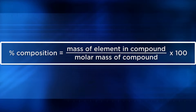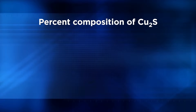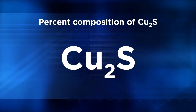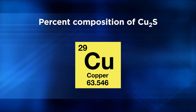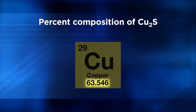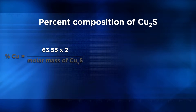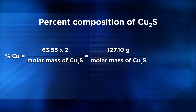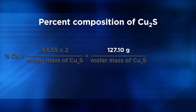Here's an example of a percent composition problem. We need to find the percent by mass of copper 1 sulfide, which is Cu2S. We can see from the empirical formula that there are 2 moles of copper for every 1 mole of sulfur. To determine copper's mass percent, use a periodic table to find the molar mass of copper: 63.55 grams. Multiply that times 2, since there are 2 moles of copper in the formula. 2 times 63.55 grams equals 127.10 grams. Place 127.10 grams, the mass of 2 moles of copper, in the numerator over the molar mass of copper 1 sulfide.